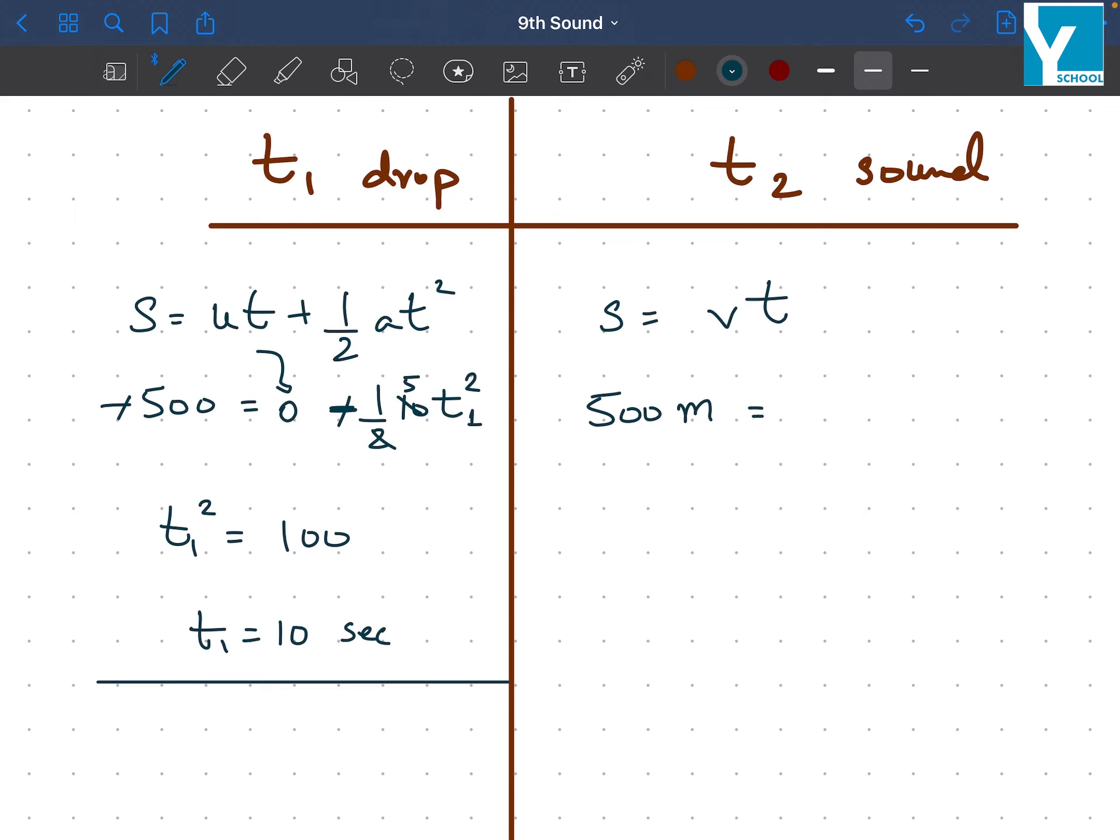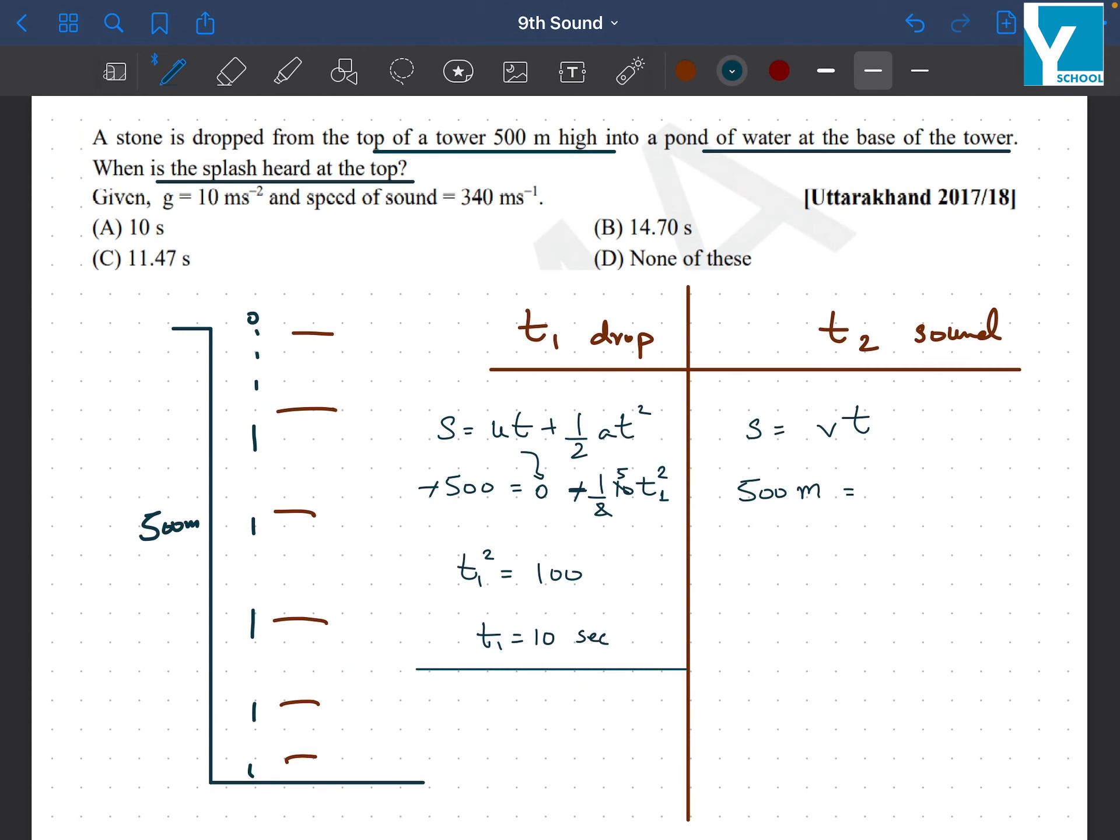It has to cover 500 meters with a speed of, are we given speed, yeah 340, with a speed of 340 meters per second. So t2 will come out to be 50 upon 34, or we can write it as 25 upon 17.